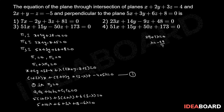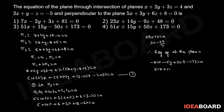Substituting the value of λ into equation (1), the required equation of the plane is −51x − 15y + 50z − 173 = 0. Taking −1 as common, we get 51x + 15y − 50z + 173 = 0, which is the required equation of the plane.